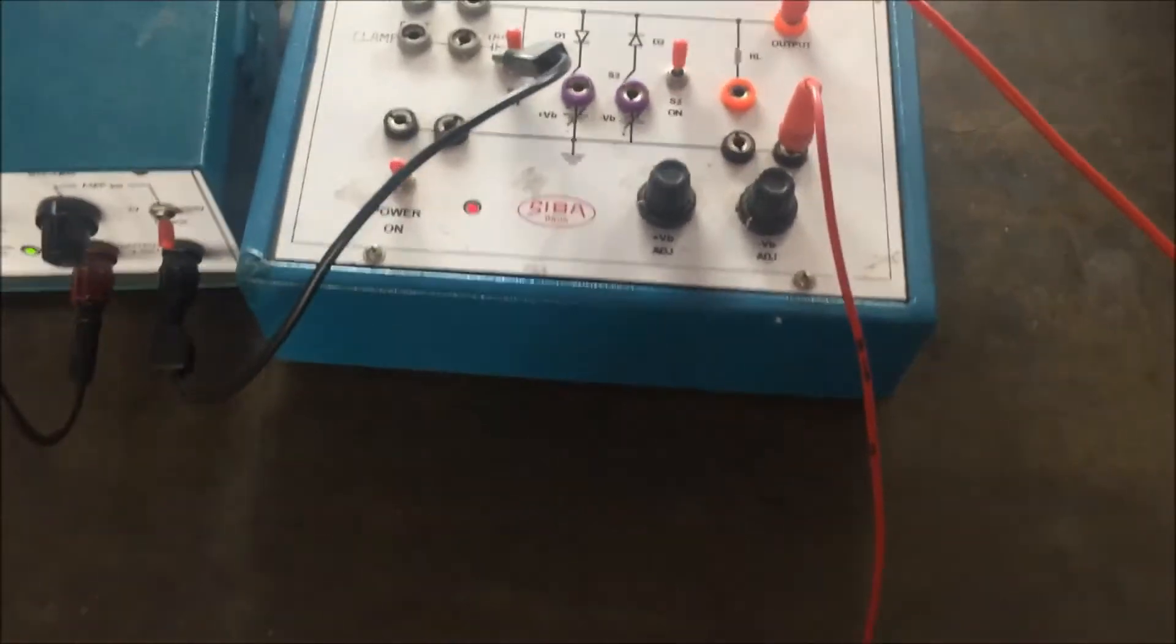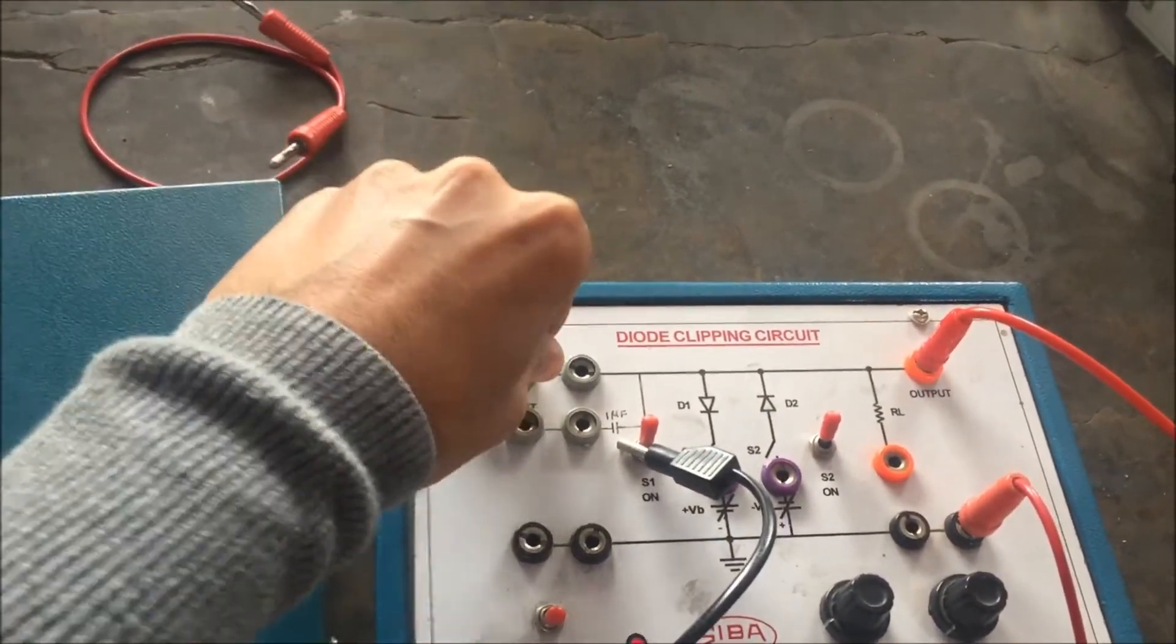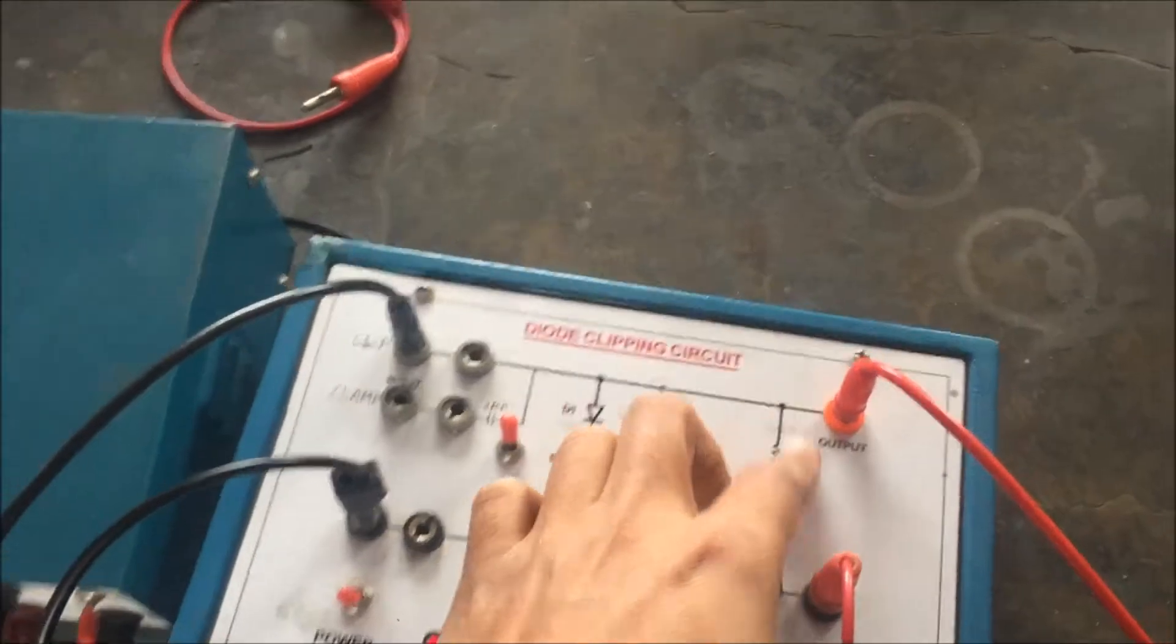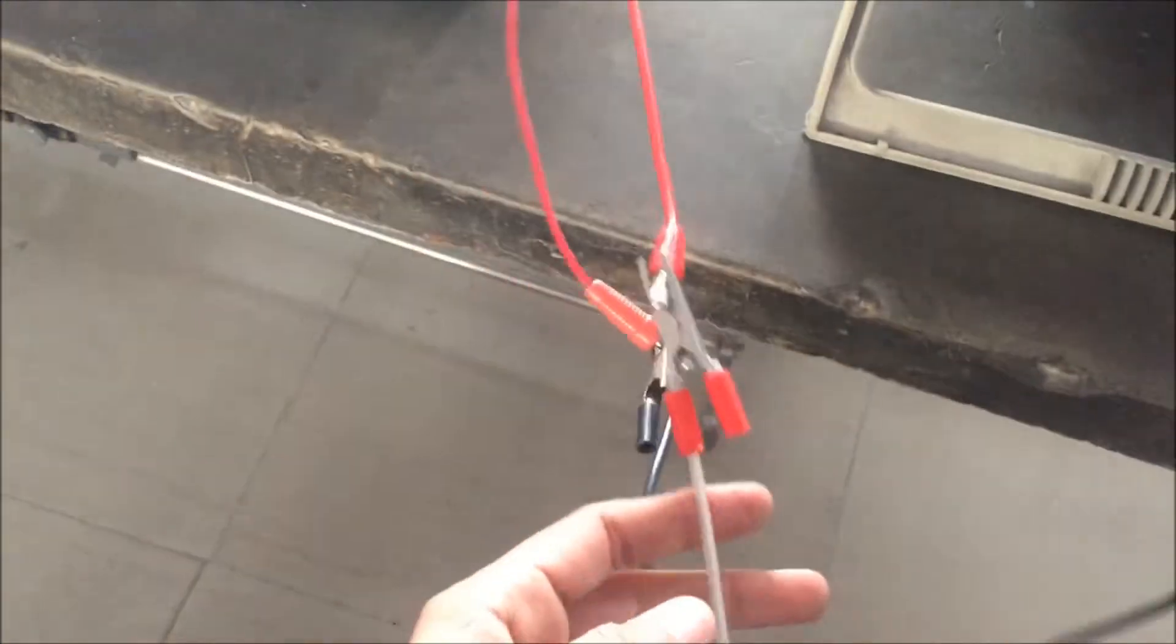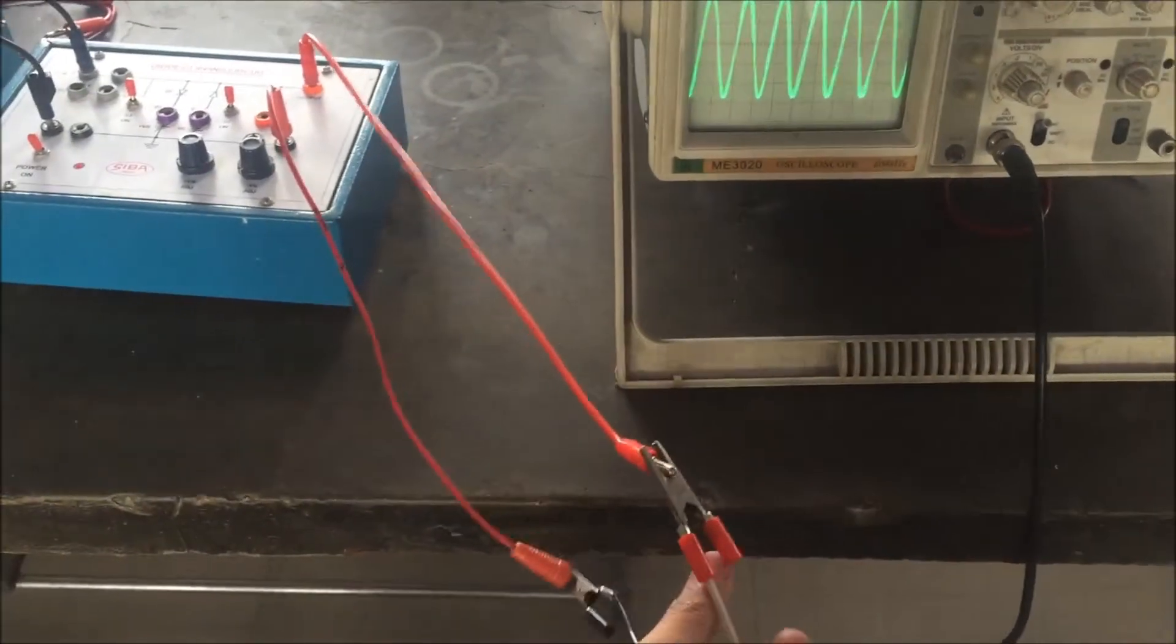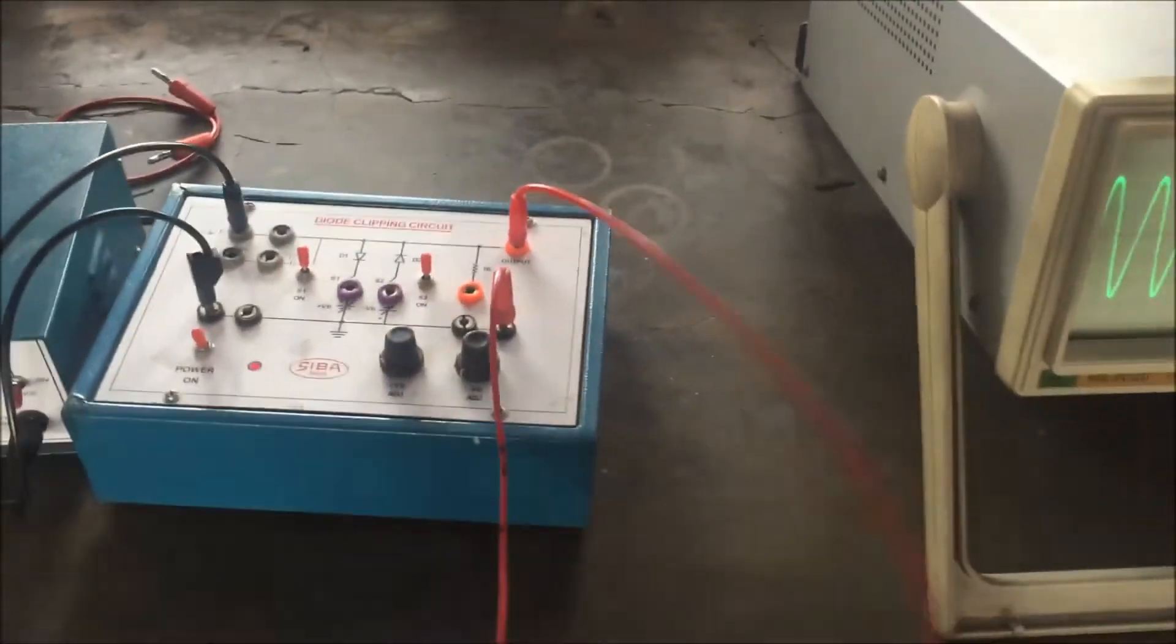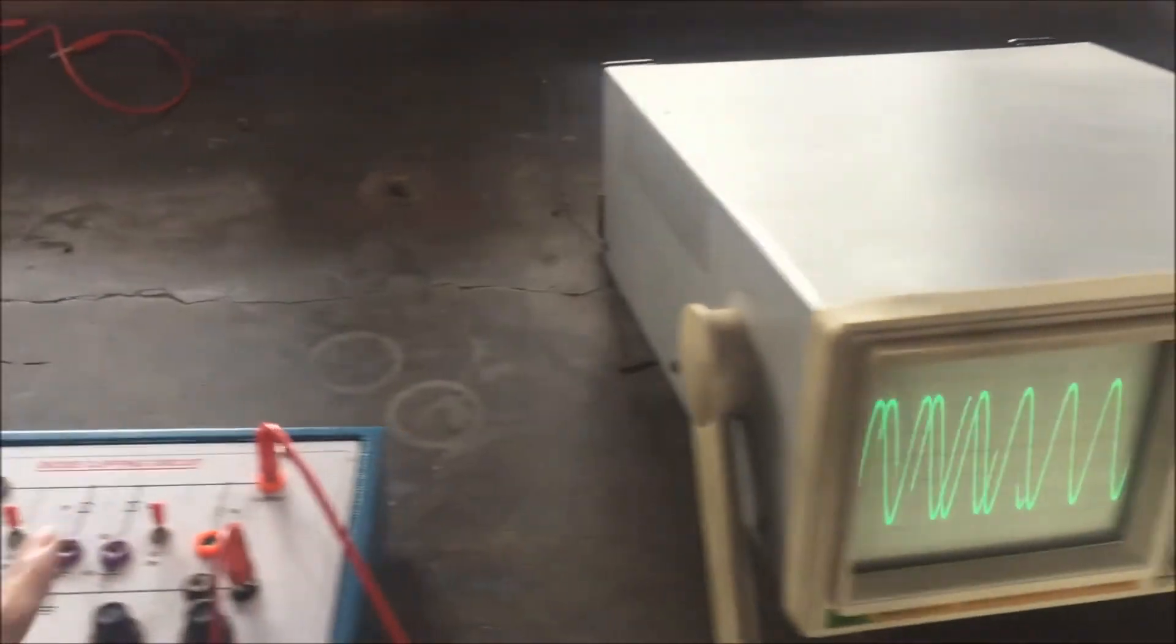Connections are very easy. This is a positive clip. It is a positive clip and the negative is ground, it is here. The output is through the load. Here the positive means red part, it is clear. And this positive is black, it is black.